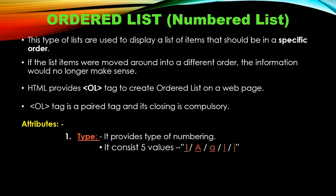The first attribute is type. The type attribute tells the browser which list marker to use — for example, Arabic numerals, uppercase alphabets, or lowercase alphabets. The type attribute provides the type of numbering, that is the type of list marker, and it consists of five values.